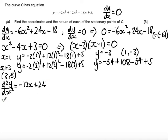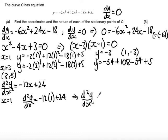Now when x is equal to 1, d2y by dx squared is equal to minus 12 lots of 1 plus 24, which gives me the second derivative is greater than 0. Which means that 1, minus 3 is a minimum.